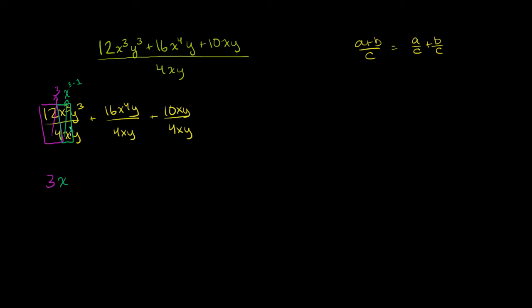This is a 1 over here. 3 minus 1 power, which would be x squared. And then finally, you have y to the third divided by y. Well, that's just divided by y to the 1. And so y to the third divided by y to the 1 is going to be y squared. 3 minus 1 is 2.